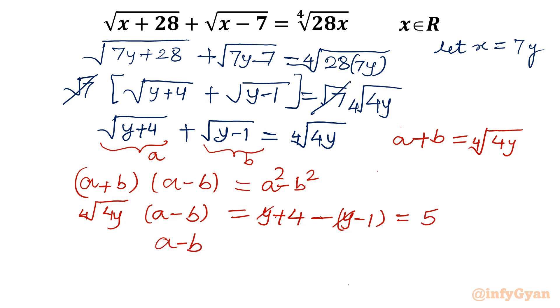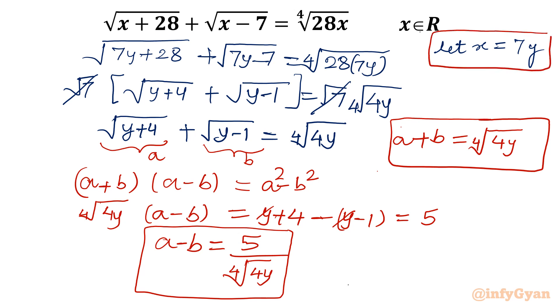So from here I am getting a minus b equal to 5 over fourth root of 4y. Let me put inside the box and see a plus b is fourth root of 4y. I am going to solve this for a. Don't forget this substitution and don't forget to subscribe my channel also.